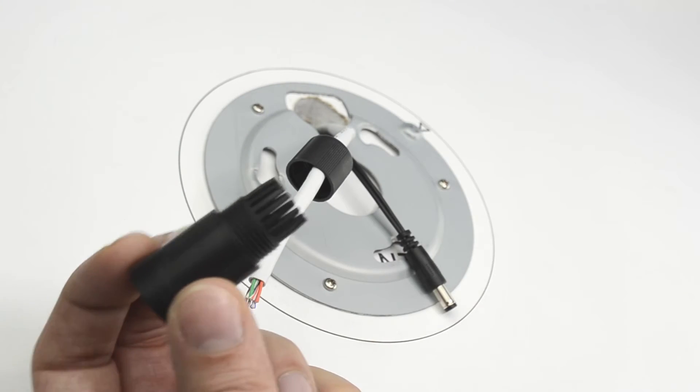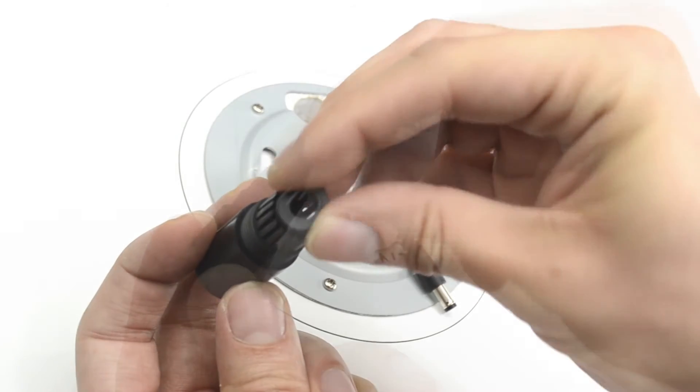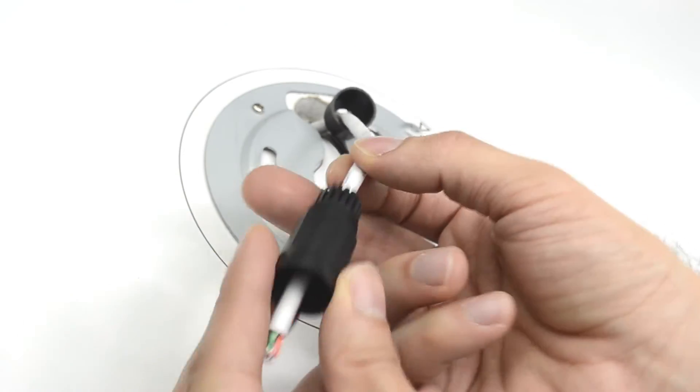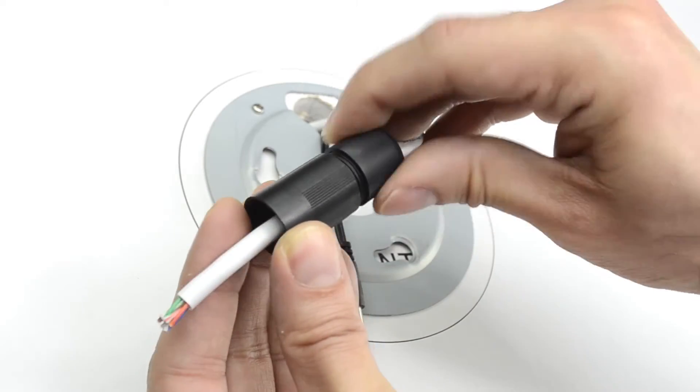To assemble the RJ45 cover, drop the small rubber washer into the plastic housing. Then run your data cable through the weatherproof cover and screw on the top cover.